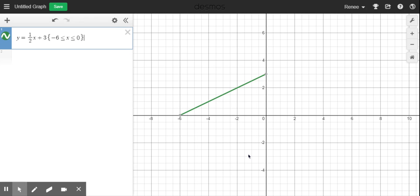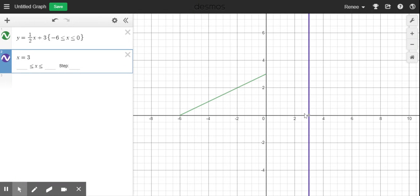Now, if I want to do something like a vertical line, I can do the same thing. So I'm going to type in a vertical line, as we know, is where X equals some value. So I'm going to say X equals three. So here's my vertical line.